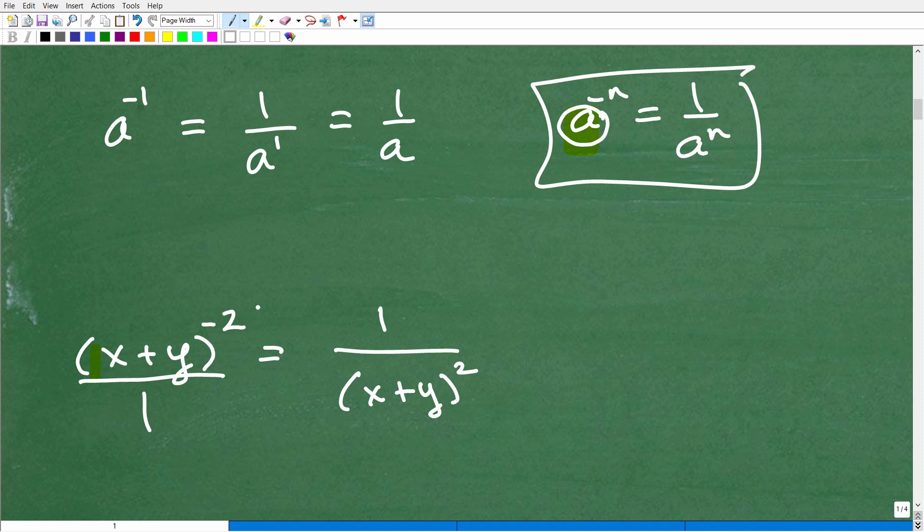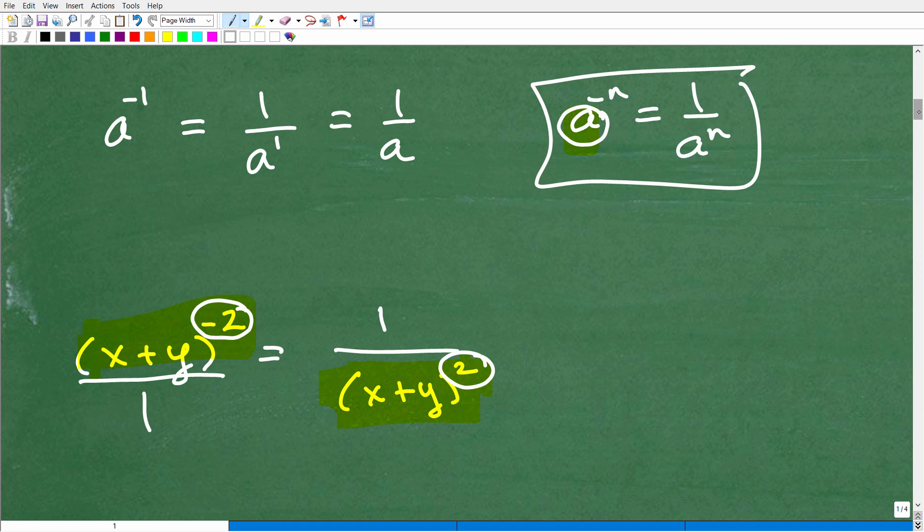Now, if I take this whole thing and I kind of plop it down to the opposite side of the fraction bar, up here it's in the numerator. If I put this down in the denominator, what happens to the exponents? This negative becomes positive. I want you to keep that in mind because this is the way I want you to remember how to work with negative exponents. So let's go on and look at some more examples.